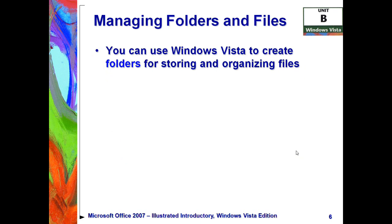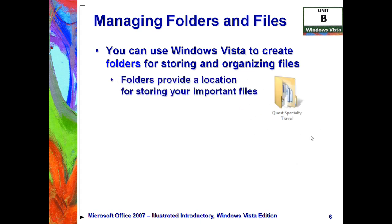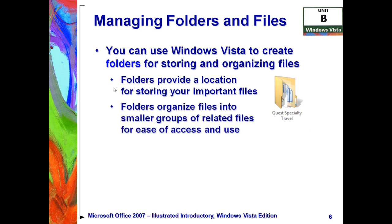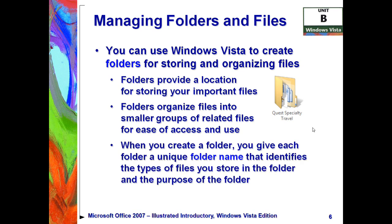One of the first tools is folders, which you can use for storing and organizing your files. That's really just a location where they're at — this folder, for example, would be on your hard drive. We have to organize our files into smaller groups of related files so they're easy to access and use. You can create a unique folder name so you know what's inside each folder. This folder icon here has the name 'Quest Specialty Travel' underneath it, telling us what's inside. So if I'm looking for something related to Quest Specialty Travel, I would look inside this folder.